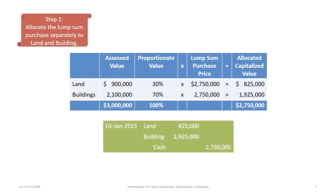The company purchased the land and building for $2,750,000. Allocating 30% to land gives $825,000 and 70% to buildings gives $1,925,000. To record the journal entry on January 1st, 2015, we debit land for $825,000, debit building for $1,925,000, and credit cash for $2,750,000.